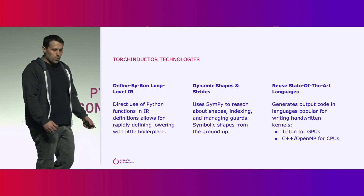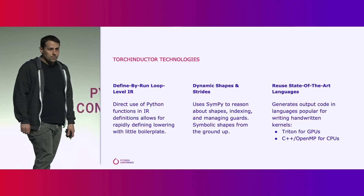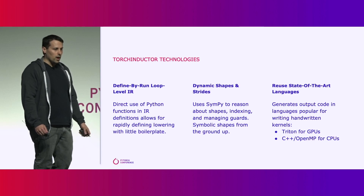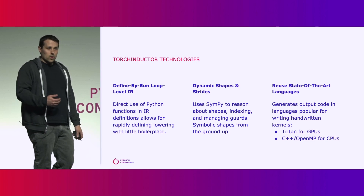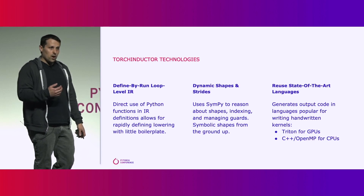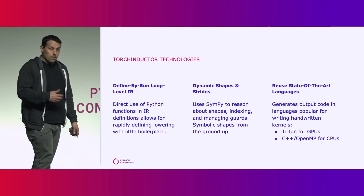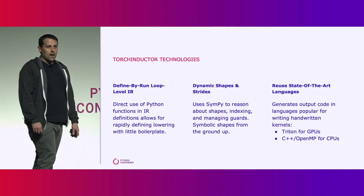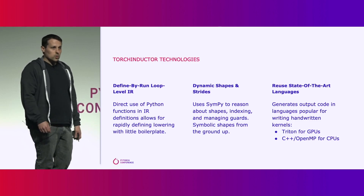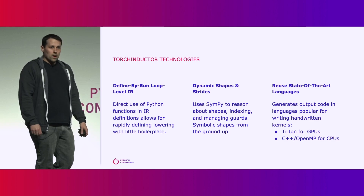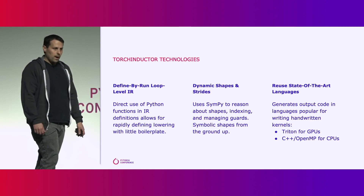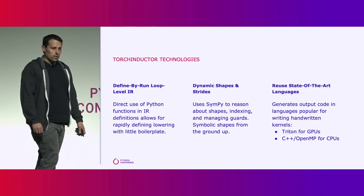Inductor uses three key technologies as well. The first technology is a defined-by-run loop-level IR. What that means is that the core compiler IR at the loop level is actually a Python callable. To do things like code generation and analysis, we actually execute the IR, which is a novel trick in the compiler space, but something that's been used for PyTorch programs for a while.